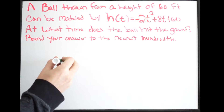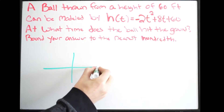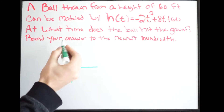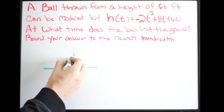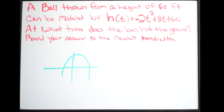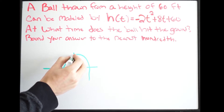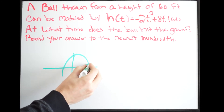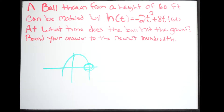You can picture it like this: we have a quadratic, and in this case it's going to be opening downward since our a is negative. Here it is being thrown from a height of 60 feet — we want to know at what time it's going to hit the ground. To do this, you're going to be solving for the zeros using the quadratic formula. The zeros are just where the quadratic is crossing the x-axis.